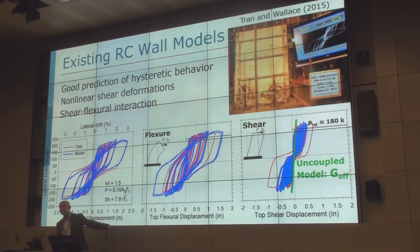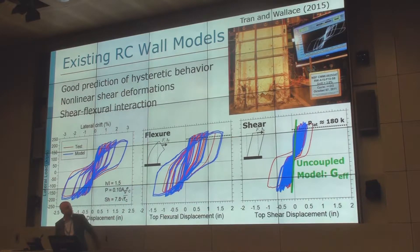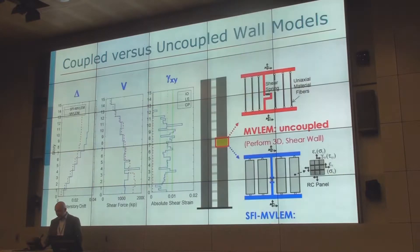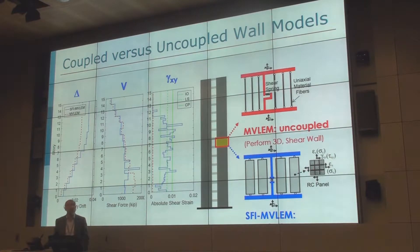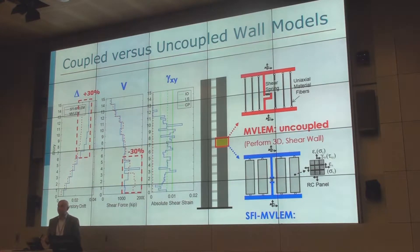One thing you can notice is it captures not only nonlinear flexure, but also nonlinear shear deformations, and they're coupled with the flexural deformation. If you're using a linear elastic shear approach, you will get something — that's the green line — but the shear-flexure model captures the nonlinearity in shear in reinforced concrete walls. Looking at an example of a coupled wall system in a 15-story building, if you include shear-flexure interaction and nonlinear shear, you get about 30% larger drifts and about 30% lower shear demand, which makes a big difference for design.